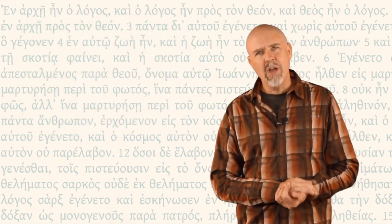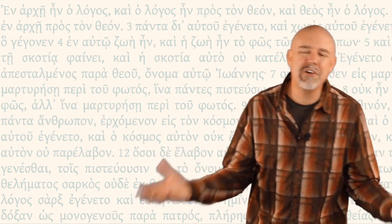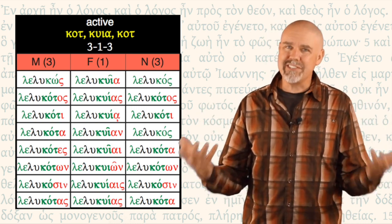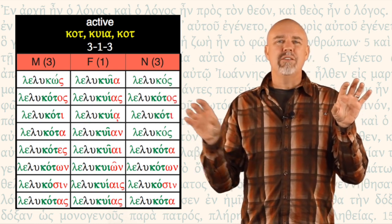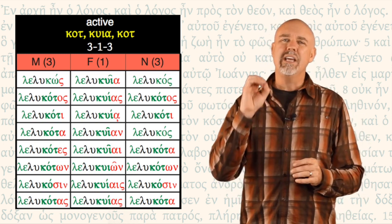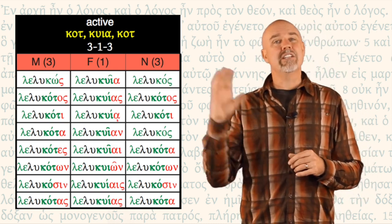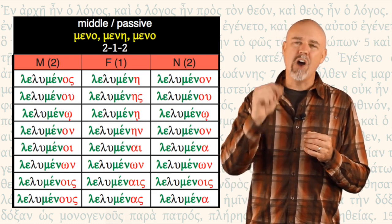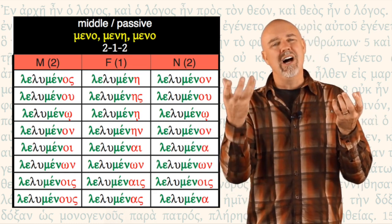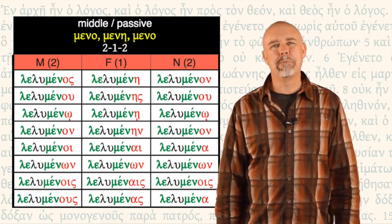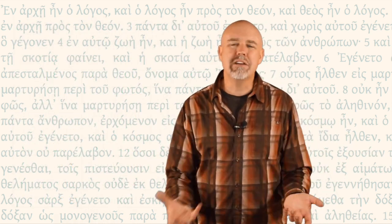Active is κότ or κυῖα; middle-passive is μέν. How will you know the case, number, and gender? In the active voice these always follow the 3-1-3 pattern. κότ — the masculine — ends in a tau, a consonant, so it follows third declension. κυῖα — the feminine — ends in a nice alpha, so it follows first declension. κότ again in the neuter: third declension — 3-1-3. In the middle and passive it's μέν, μένη, μένον — so omicron, alpha, omicron — the 2-1-2 pattern.